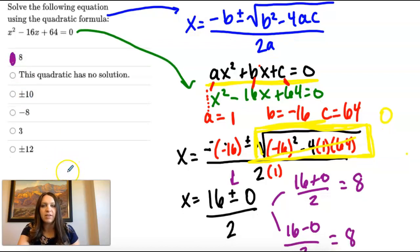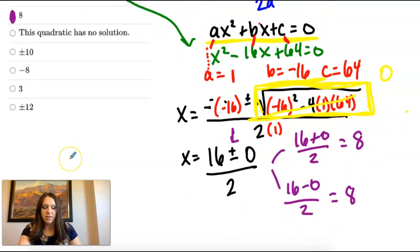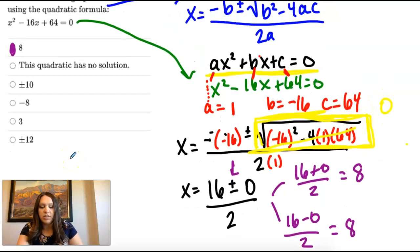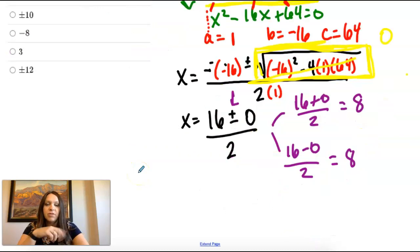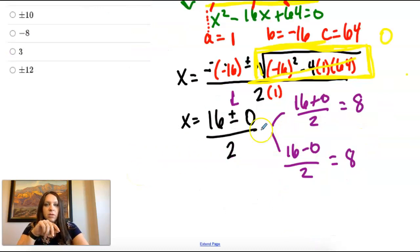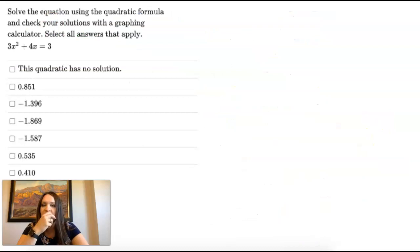But most quadratics have two solutions. There's some that have 1 and some that have 2, or sorry, 0. Most of them have 2. Okay, so let's do another one.